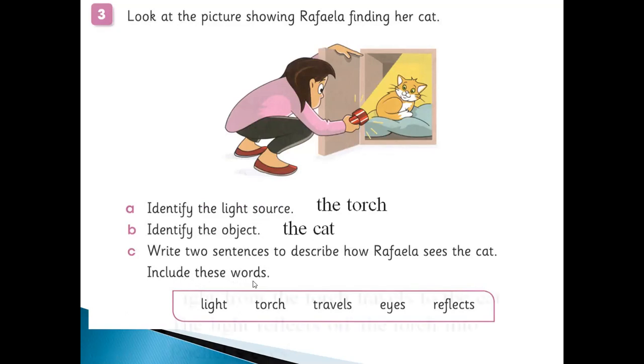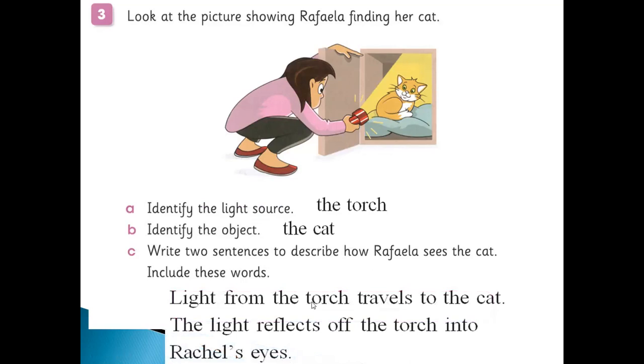You can write it like this: light from the torch travels to the cat. Then the light reflects off the torch into Rafila's eyes. Done boys.